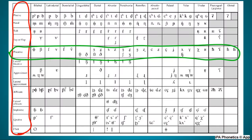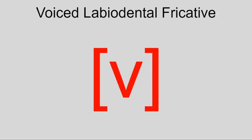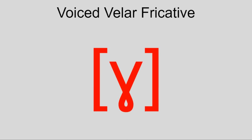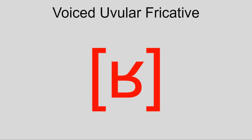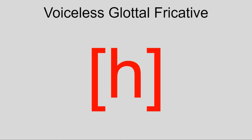Back into the obstruents with fricatives. As their name implies, fricatives are made using friction between the articulators. They're arguably the most versatile manner of articulation and include f, v, θ, ð, s, z, ʃ, ʒ, x, ɣ, χ, ʁ, ħ, ʕ, h, and ɦ.